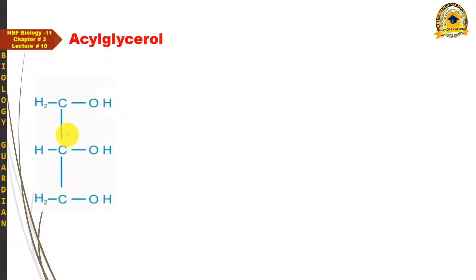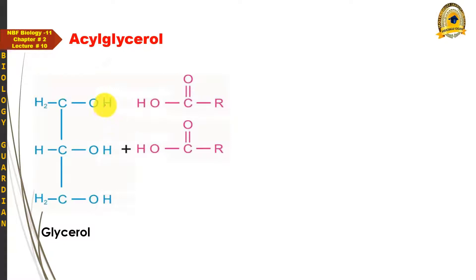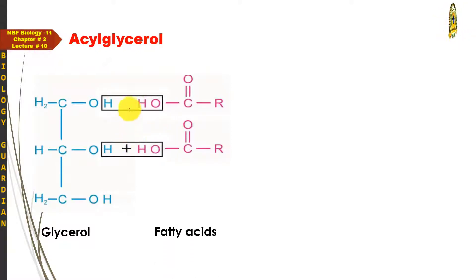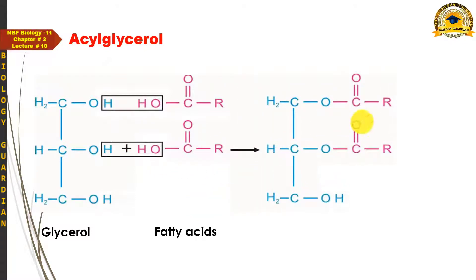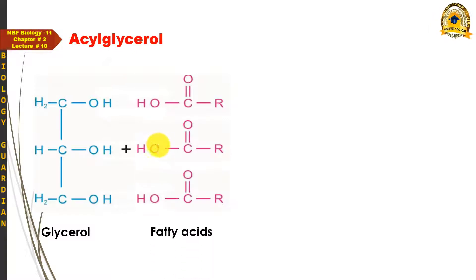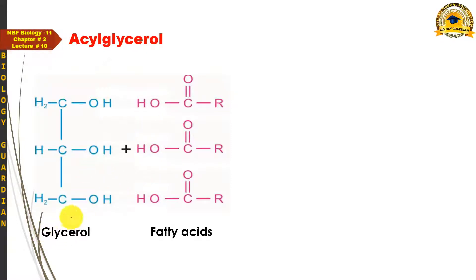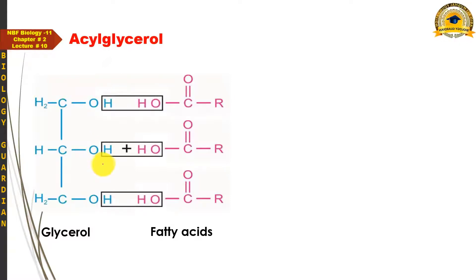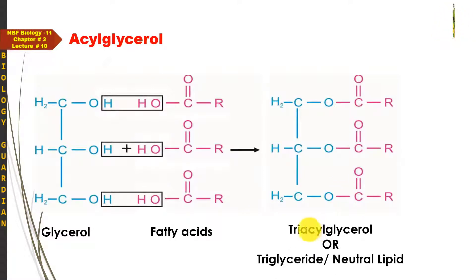اگر glycerol کے پہلے دو OH groups کے ساتھ دو fatty acids esterify ہو جائیں تو ہر fatty acid کے carboxylic acid group سے OH اور glycerol کے OH سے hydrogen نکل کر دو water molecules بنتے ہیں، اور جو structure بنتا ہے اسے diacylglycerol کہتے ہیں۔ اگر glycerol کے ساتھ تین fatty acids ایک ساتھ react کریں تو تین water molecules release ہوتے ہیں اور جو structure بنتا ہے اسے triacylglycerol یا triglyceride کہتے ہیں، جسے neutral lipid بھی کہا جاتا ہے۔